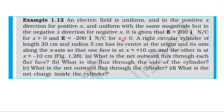A right circular cylinder of length 20 cm and radius 5 cm has its center at the origin and its axis along the x-axis, so that one face is at x equal to 10 cm and the other face is at x equal to minus 10 cm.